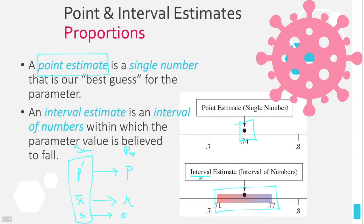Here is a single point estimate, and here is an interval estimate — and that's why we define point estimates, to contrast with interval estimates. An interval is a range of numbers, not just a single number. There are actually infinitely many numbers between 0.71 and 0.77, and every number in that range is part of our interval estimate.